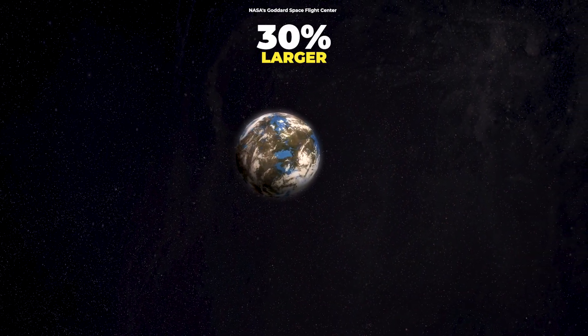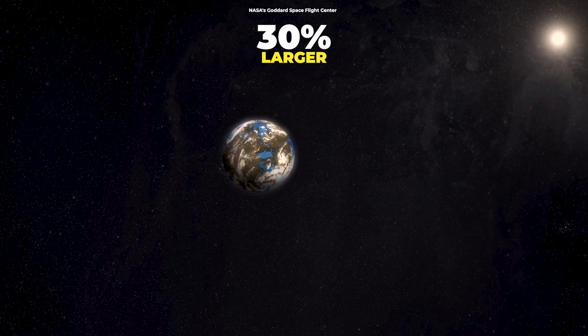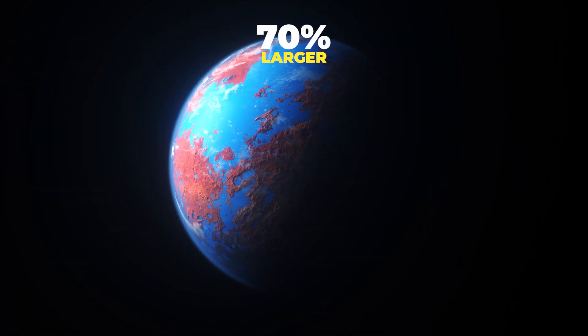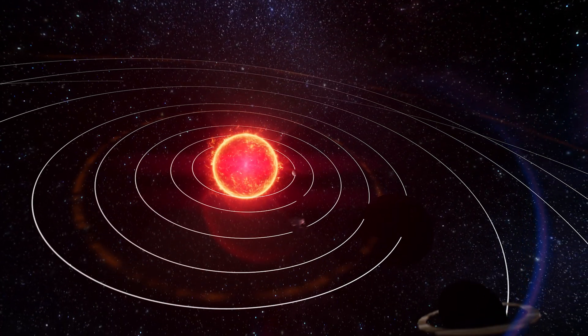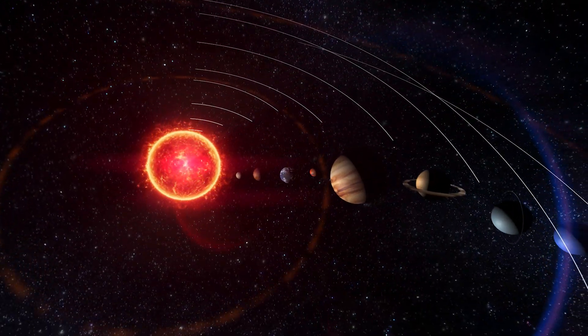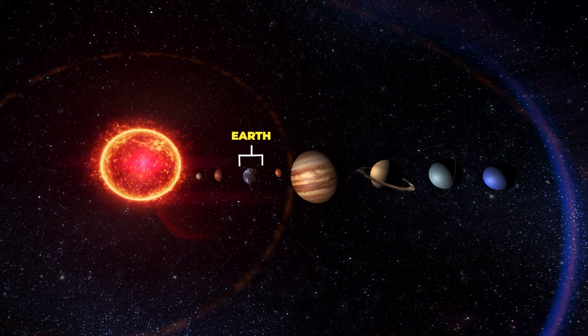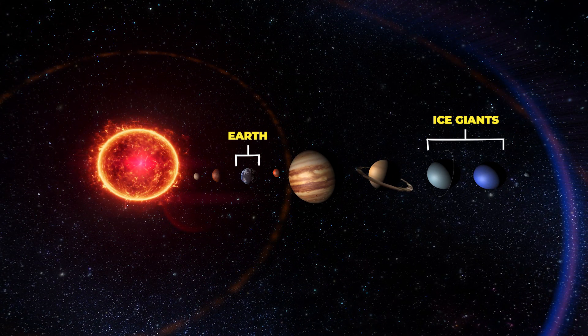One planet is 30% larger than Earth and orbits its star in less than three days. The other is 70% larger than the Earth and might host a deep ocean. These two exoplanets are super-Earths, more massive than the Earth but smaller than ice giants like Uranus and Neptune.